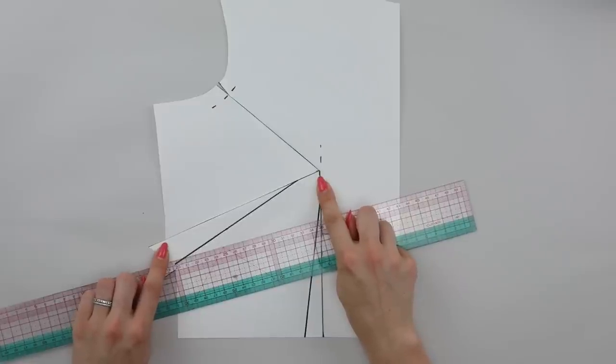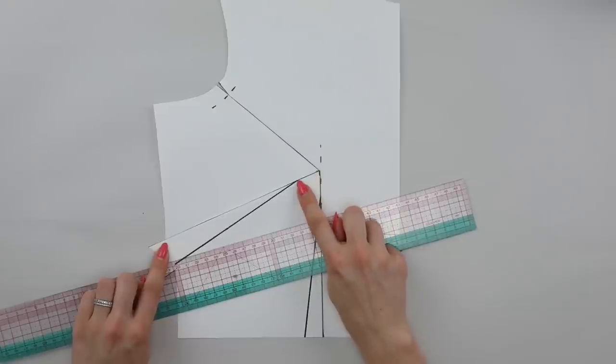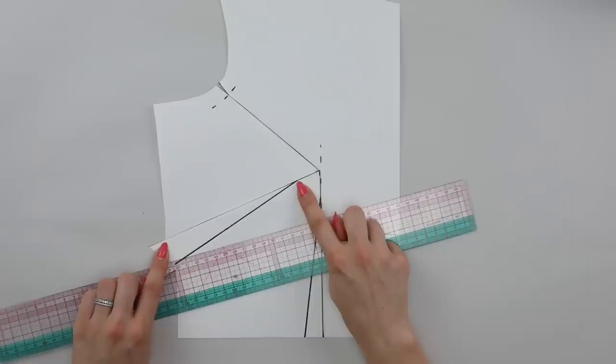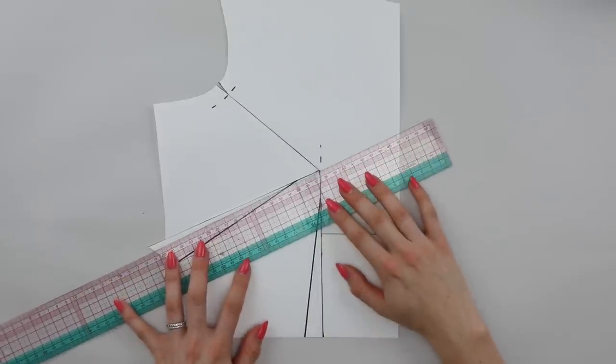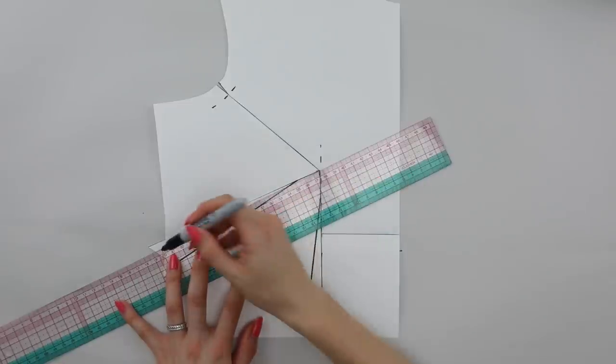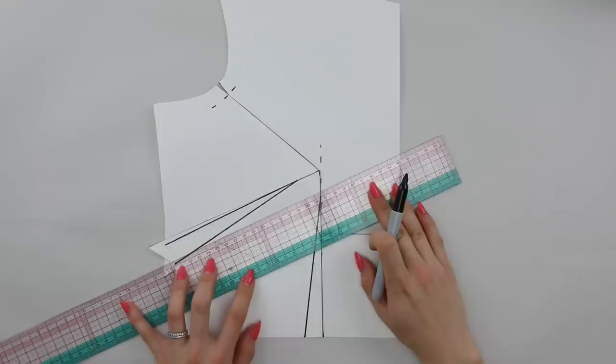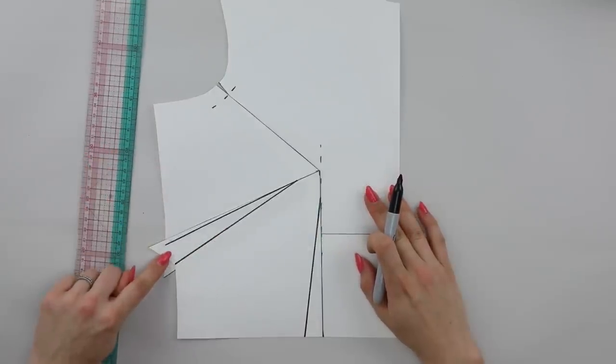Now the dart point needs to point towards the bust apex, but how close it needs to be from the bust apex depends on your individual bust. Generally speaking, the smaller the bust the closer it can be, the larger the bust the further away the dart point should be from the bust apex, but that isn't always a hard and fast rule. It does depend on the shape of your bust. So as a starting point, I would recommend redrawing in the darts and trying that in a sample garment.